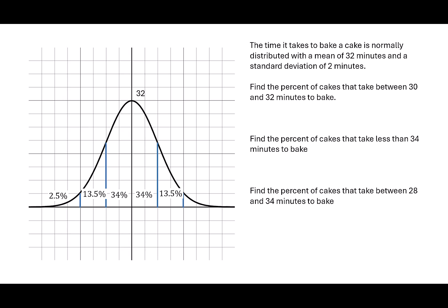If I add 32 plus 2, that tells me my first standard deviation is at 34. If I add another 2 to get my second standard deviation, I'm at 36.